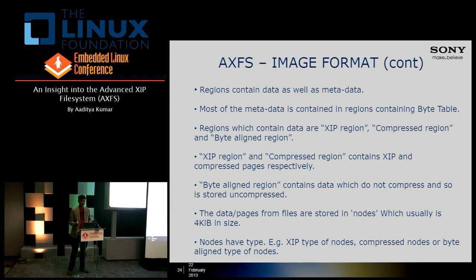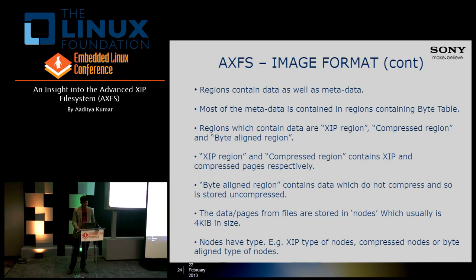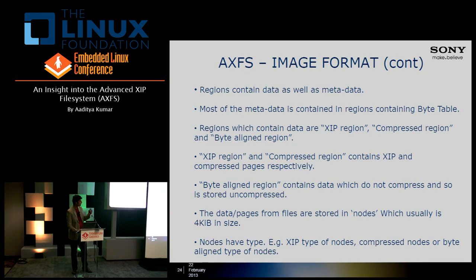What are regions? Regions contain both data and metadata — basically anything the file system holds. Most regions that contain metadata hold it in the form of byte tables. Regions which contain actual data are: XIP regions, compressed regions, and byte-aligned regions. XIP and compressed regions contain the XIP pages and compressed pages respectively. Byte-aligned regions contain data that does not compress well — if we get poor or negative compression, we keep the data as-is in a byte-aligned region.